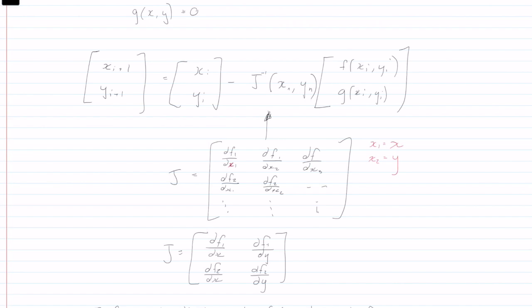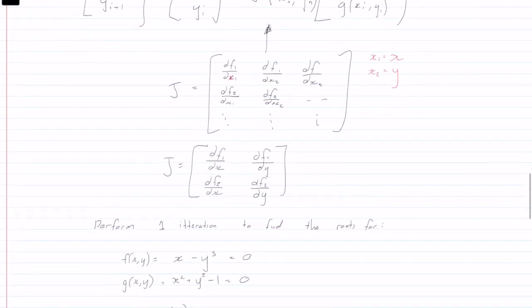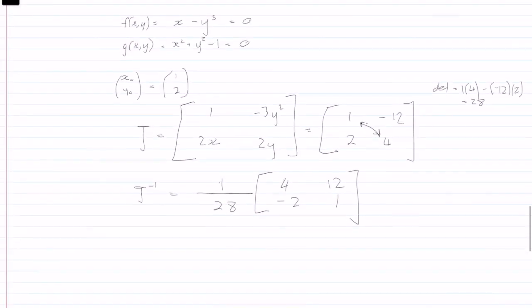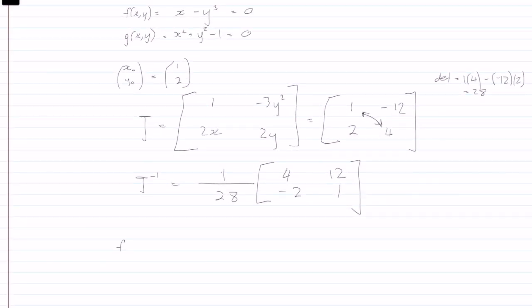And now we just need to plug in our initial values, x_0 and y_0 into our equation. And if we do that, what we're left with is f of one, two is equal to one minus 2 cubed, which is equal to minus seven.